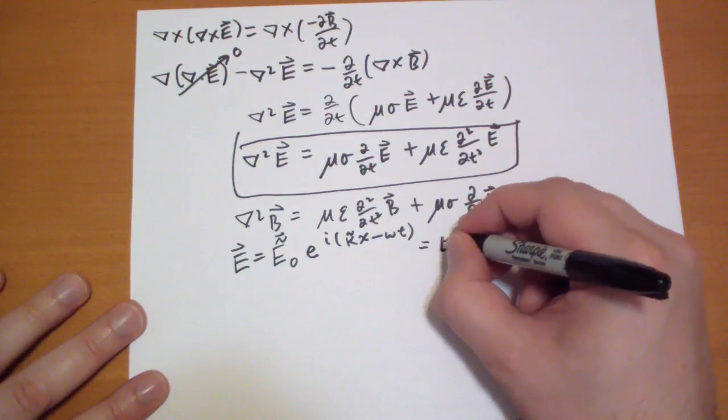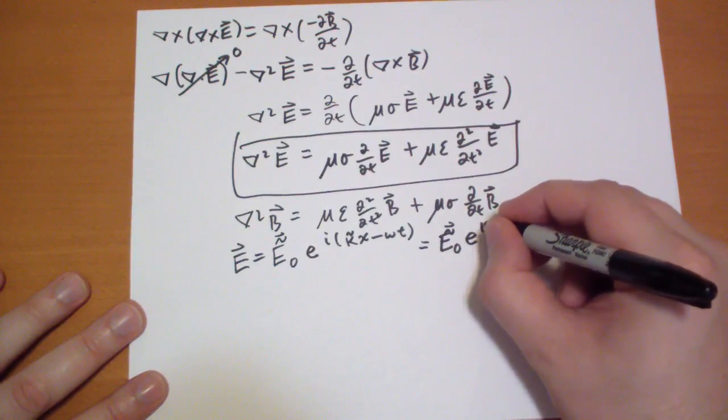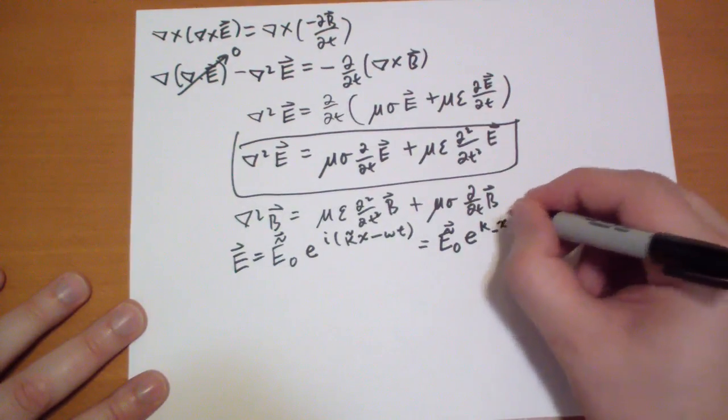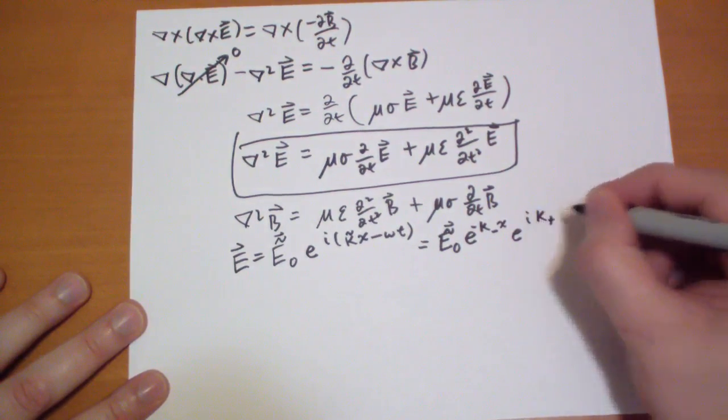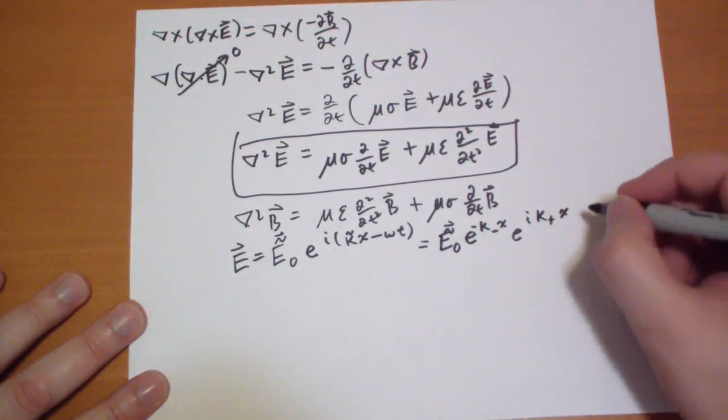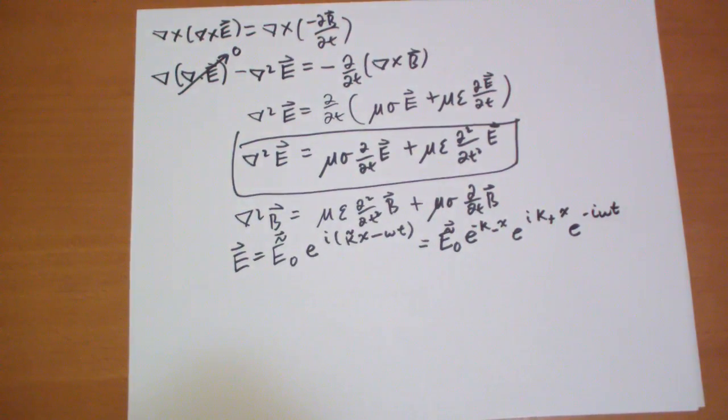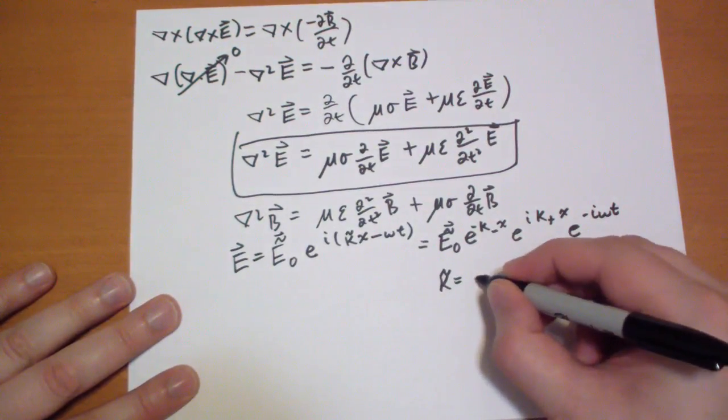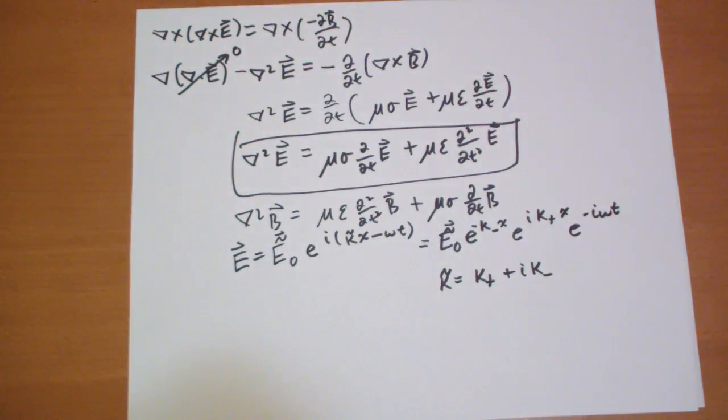So we can write it out this way E to the kappa imaginary term minus that E to the I kappa the real term x x and then E to the minus I omega t okay? Where kappa complex is equal to kappa plus I kappa minus okay? So kappa plus and kappa minus are both real numbers but kappa is that the kappa that we have to use in order to make this equation work so kappa squared